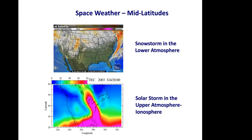This slide shows a comparison of weather features in the lower atmosphere with those in the ionosphere. In the troposphere you have snowstorms east of Utah and another storm east of the United States. In the ionosphere and upper atmosphere, you have what's known as a storm-enhanced density — a ridge of high plasma density that could be a factor of two or more compared to the background, extending from below Florida up to Canada.